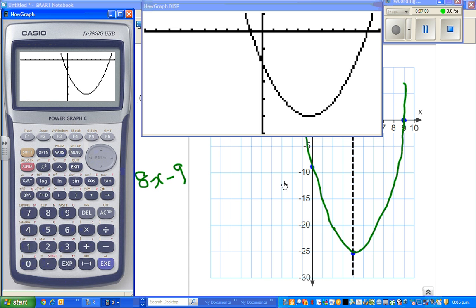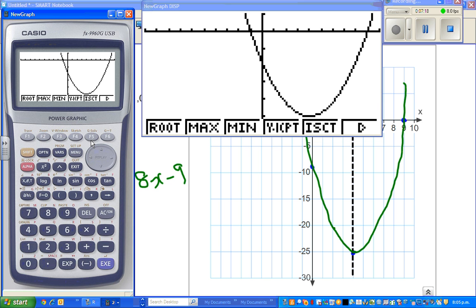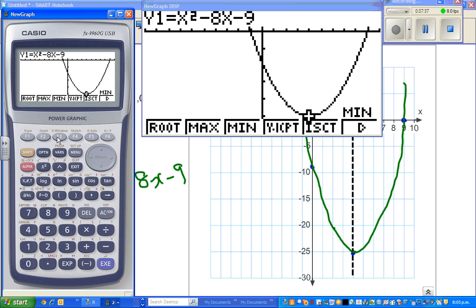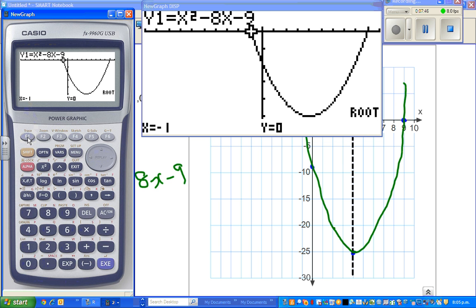You can match this with this. We know the y-intercept is negative 9. Let us look at the vertex - minimum 4, negative 25, that's your vertex. The next is your x-intercept. On a graphic calculator they are called the roots. This is one root, negative 1, 0. And if you press this, you get the other root, 9, 0.